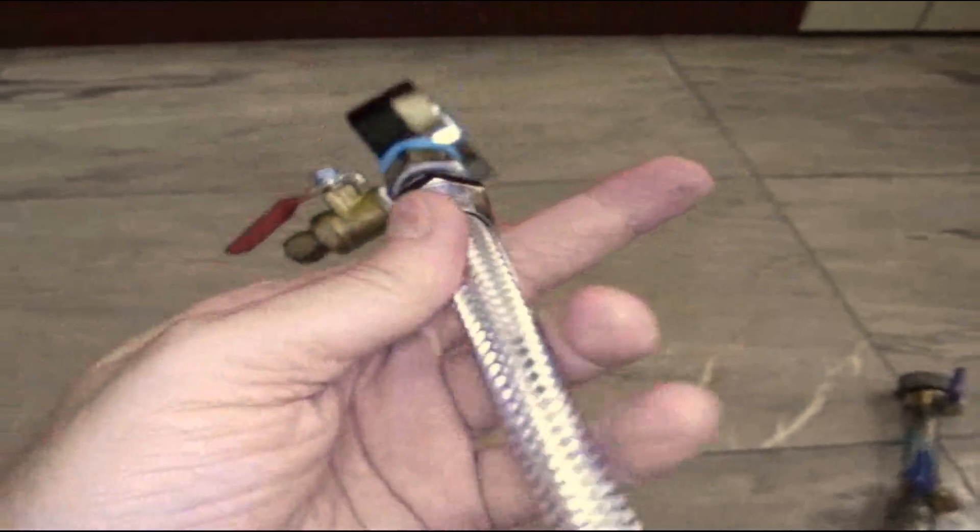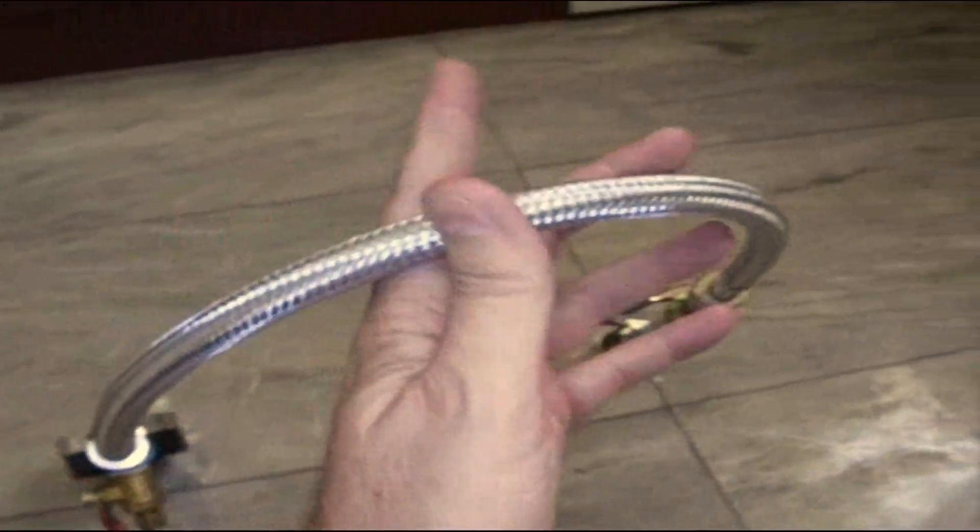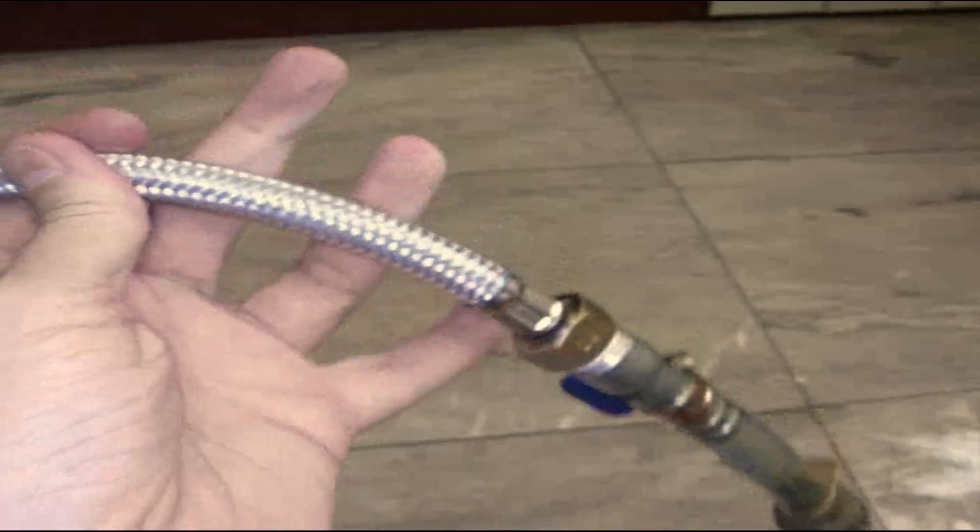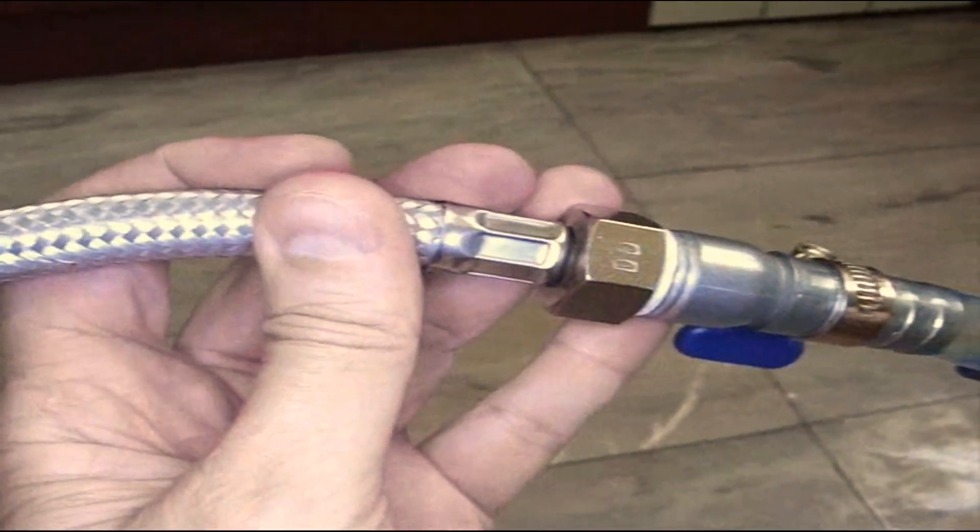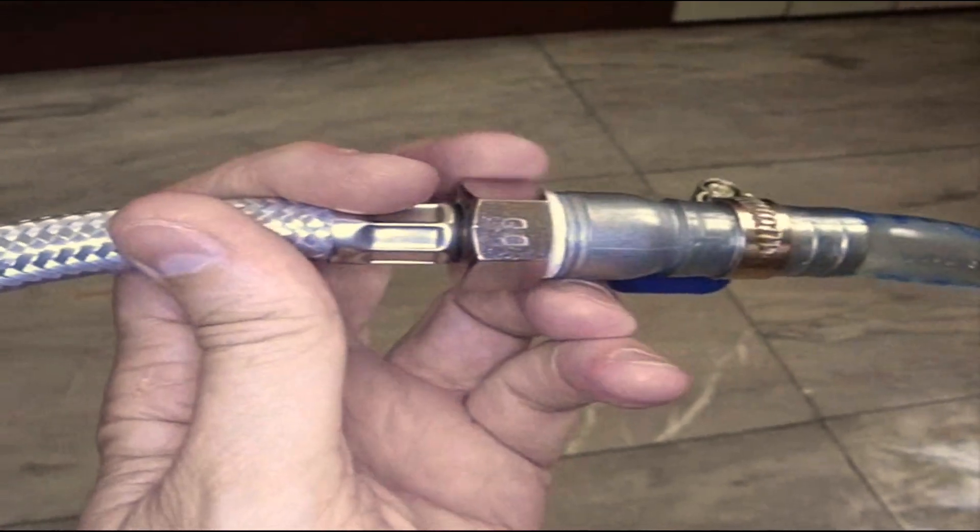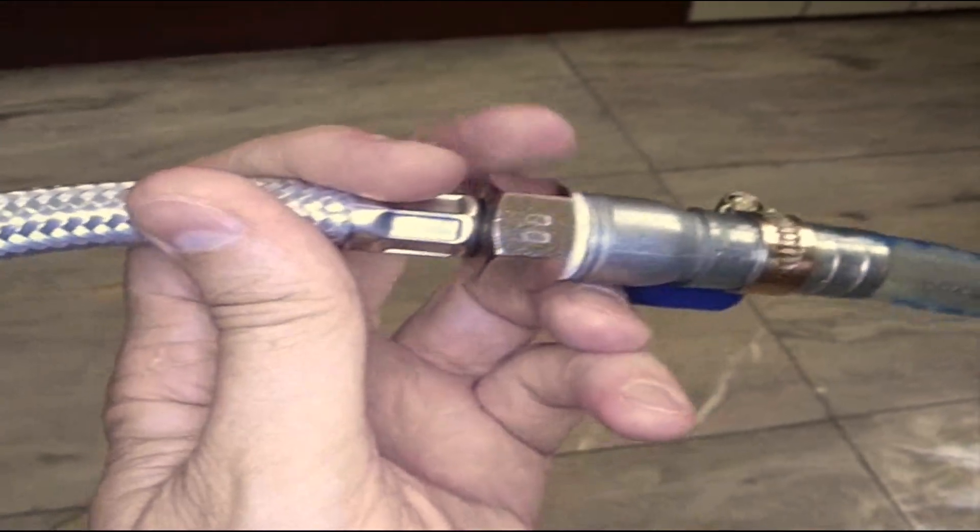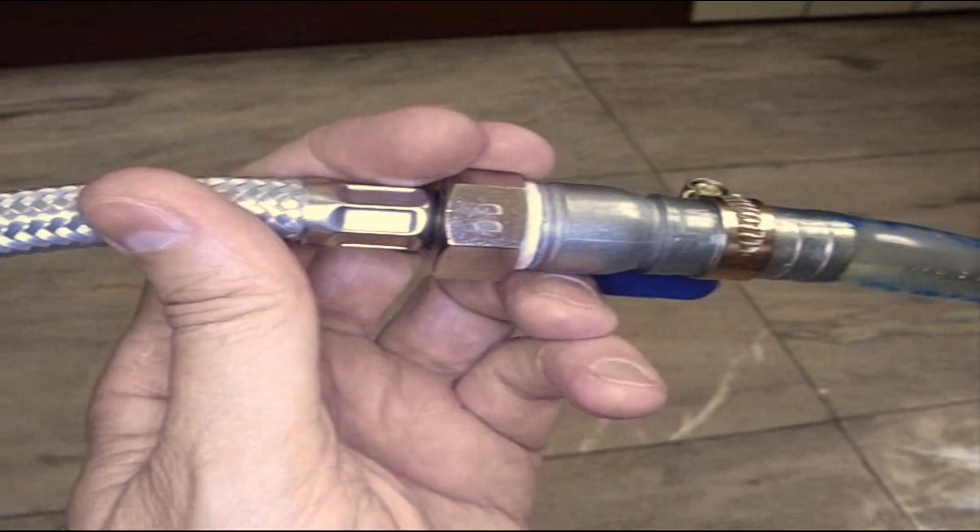And then this tubing. You probably recognize it. It comes out and goes to, it's used to connect the wall to the toilet or wall to the sink or whatever like that. And so I can use this piece right here to connect to sinks or toilet taps or whatever to check pressure there.